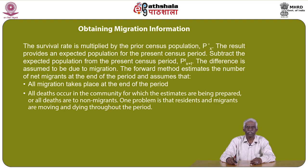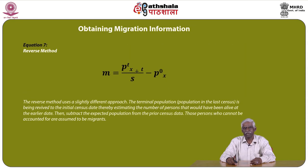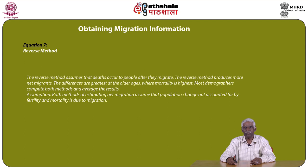One problem with the forward method is that residents and migrants are moving and dying throughout the period. The reverse method equation is: M = P(t, x+t) / S − P(0, x). The reverse method uses a slightly different approach: the terminal population is revived to the initial census date, estimating persons alive at the earlier date. Those who cannot be accounted for are assumed to be migrants. The reverse method assumes that deaths occur to people after they migrate and produces more net migrants. The differences are greatest at older age ranges where mortality is highest. Most demographers compute both methods and average the results.